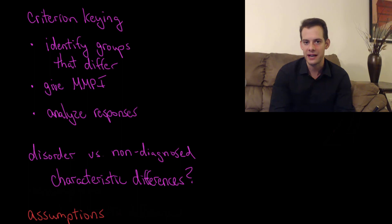For example, I might pick a particular group of people with a particular disorder. I might have a group of people who have been diagnosed with depression and then another group of people who have not been diagnosed with depression. I have all of these people take the MMPI, and then I look for characteristic differences between the two groups.